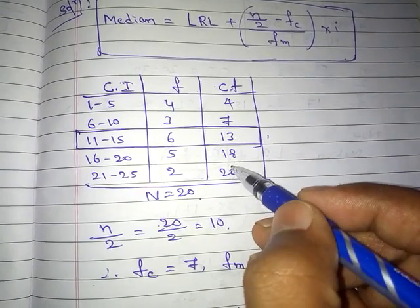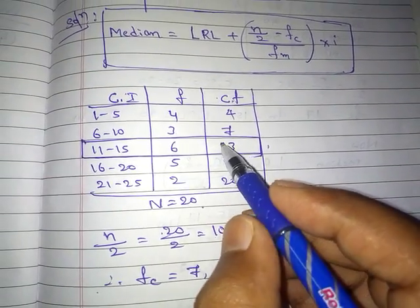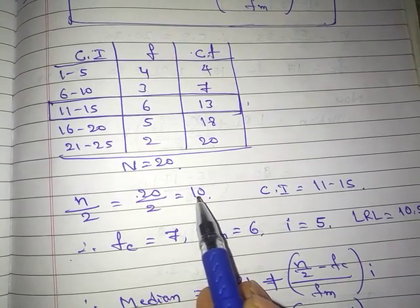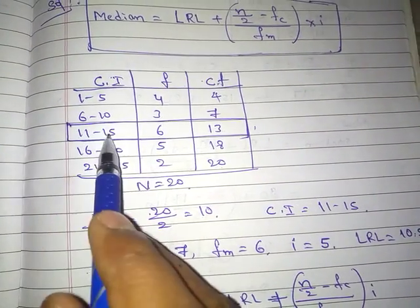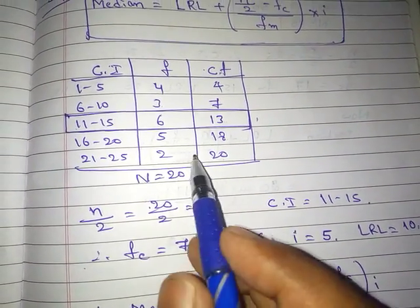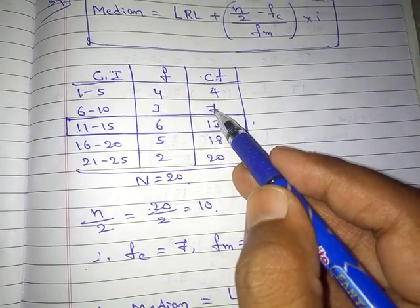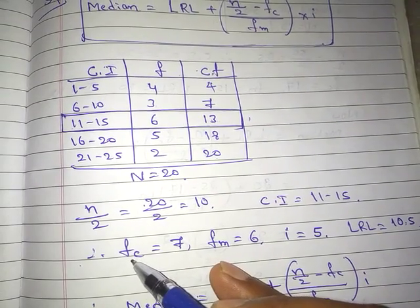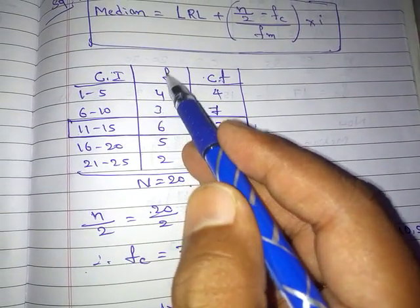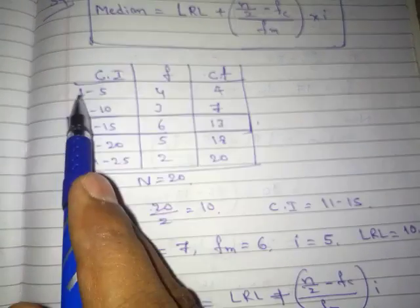So 13 contains the value 10 — 7 is less than 10 and 13 is the one that has 10 in it. The class interval is 11 to 15. Now n/2 = 10. For fc, we take the cumulative frequency just above — the top of the median class — which is 7. So fc = 7. And fm, the median class frequency, is 6.